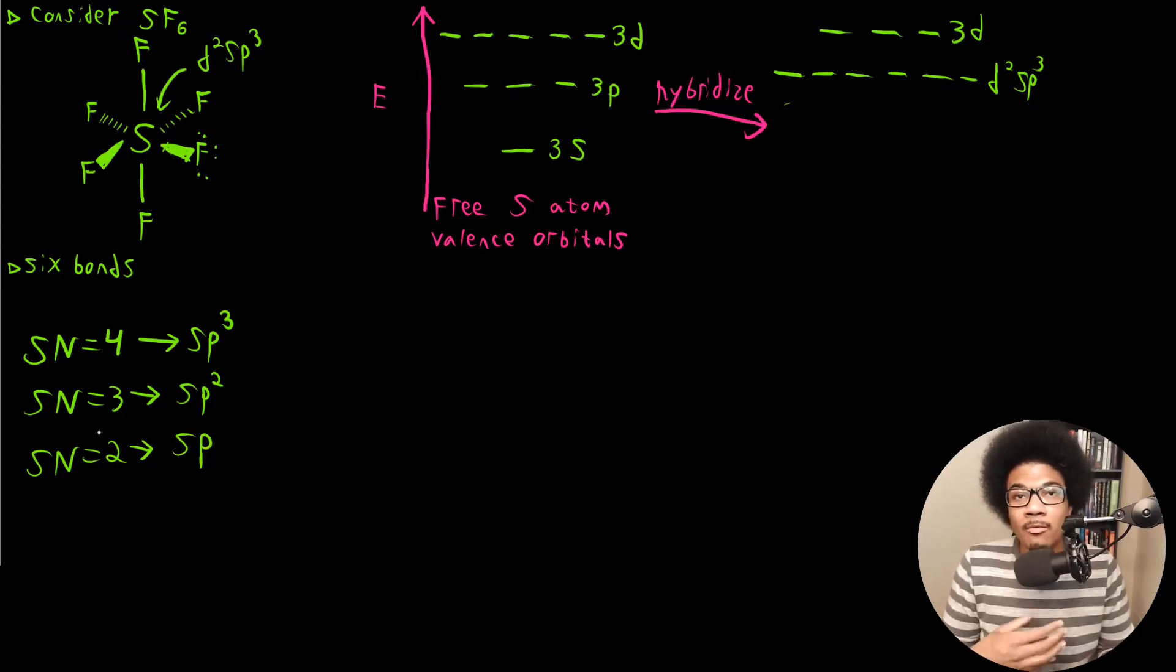So really just however many electron groups you have around an atom is going to determine how many hybrid orbitals you need. So if you got two, SP; three, SP2; four, SP3, since this is four orbitals, three orbitals, two orbitals.